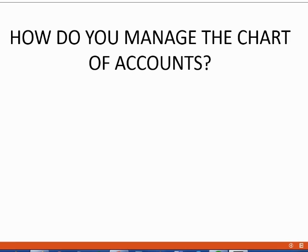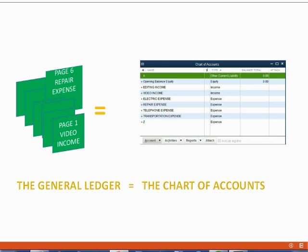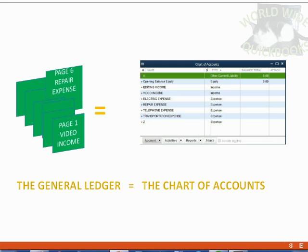The next part of the setup is managing the chart of accounts — meaning deleting, editing, or adding an account. We know that the chart of accounts is the same thing as the general ledger. The picture here shows Holden's chart of accounts. Remember, if it's a different type of company, the account names will be different, because a different company runs differently and therefore needs a different set of accounts to record their transactions.